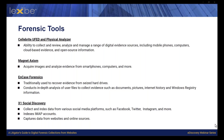With Cellebrite Physical Analyzer, this tool has the ability to collect, review, analyze, and manage a wide range of digital evidence sources, including mobile devices, computers, cloud-based evidence, and open source information. It can help trace back to events that occurred on devices or cloud-based platforms, essentially building a storyline for an investigation. Similarly, Magnet Axiom acquires images and analyzes evidence from smartphones, computers, and cloud-based platforms. It categorizes the artifacts found on these devices and platforms so we can review, tag, and export the desired evidence.